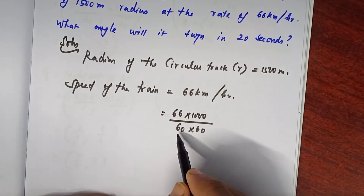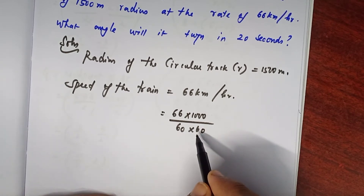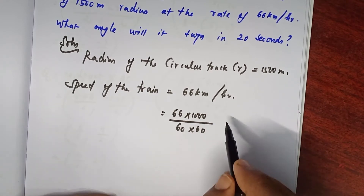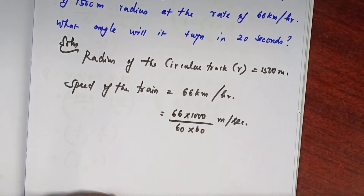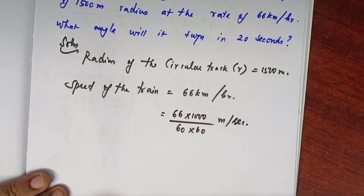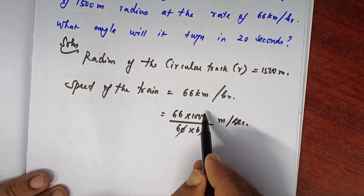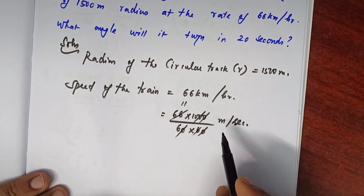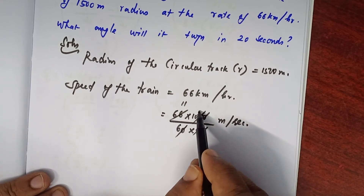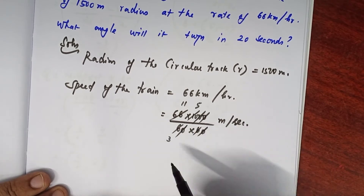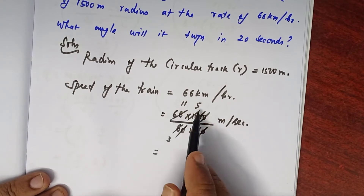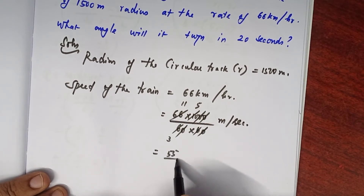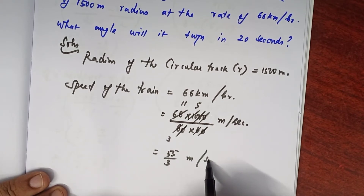The first 60 is for converting per hour to per minute, and the second 60 for per minute to per second, so it is automatically converted into meter per second. Simplifying: the zeros cancel, giving 11 by 5 — that is 55 divided by 3 meter per second. That is the speed of the train.